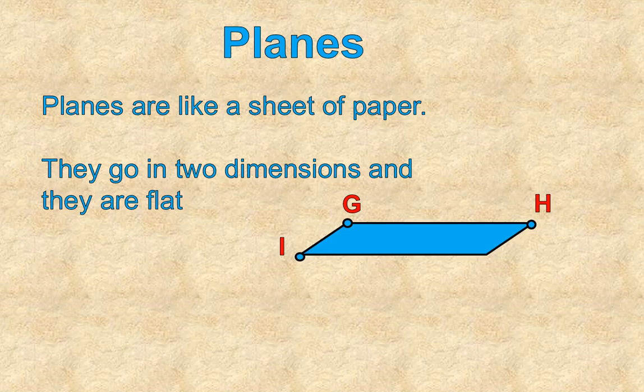So if I were labeling this, this from G to H would be one line segment. Line segment GH. It's just part of a line. It doesn't have the arrows on the end, so we call it a line segment. Line segment GH and line segment GI or IG. Again, you can do them in any order with lines or line segments.